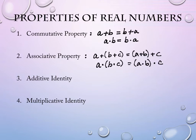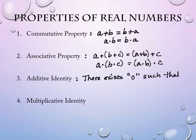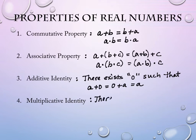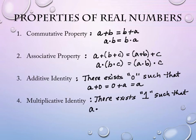The additive identity and the multiplicative identity are the next two. The additive identity says there exists the number zero such that a plus zero equals zero plus a equals a — you can add zero to something and it doesn't change it. Likewise, there exists the number one such that a times one equals one times a equals a.